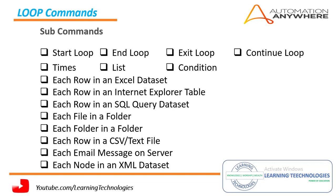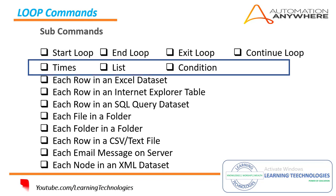If you see on my screen, we are having a lot of loop subcommands: start loop, end loop, exit loop, and continue loop — these are the four types of loop structures provided by the loop commands. Below that you see: times, list, condition, each row in an Excel dataset, each row in an Internet Explorer table, each row in an SQL query dataset, each file in a folder, each folder in a folder, each row in a CSV file, each email message on server, each node in an XML dataset. These are all the subcommands available, used for iterative purposes. I will explain only times, list, and condition subcommands in this session.